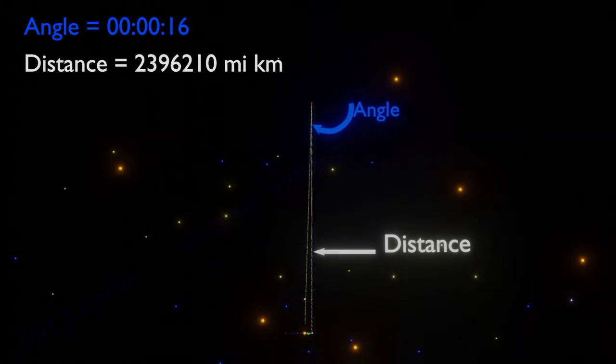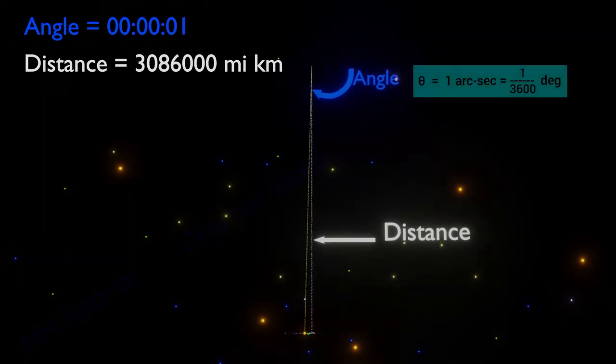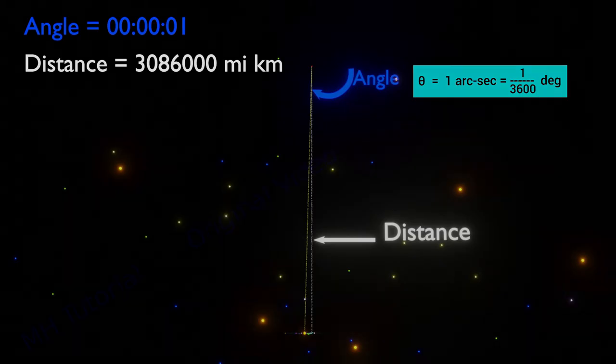If we want the object to make even smaller angle, that is of 1 arc second, or 1 by 3600 degree, then the object should go to some trillion kilometers away from the earth. This distance is known as 1 parsec.